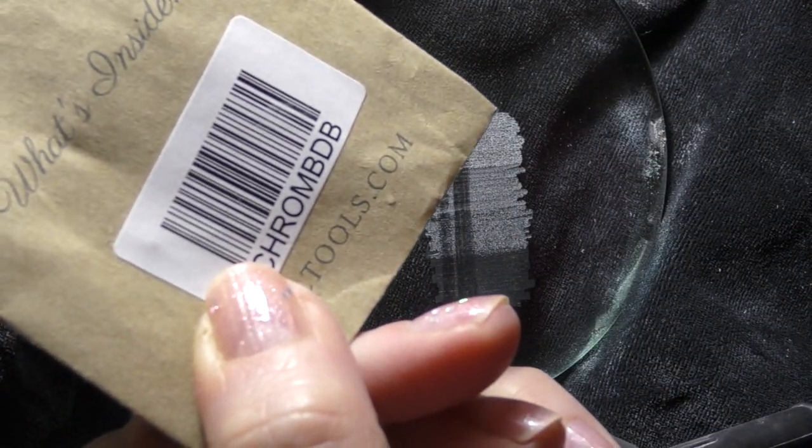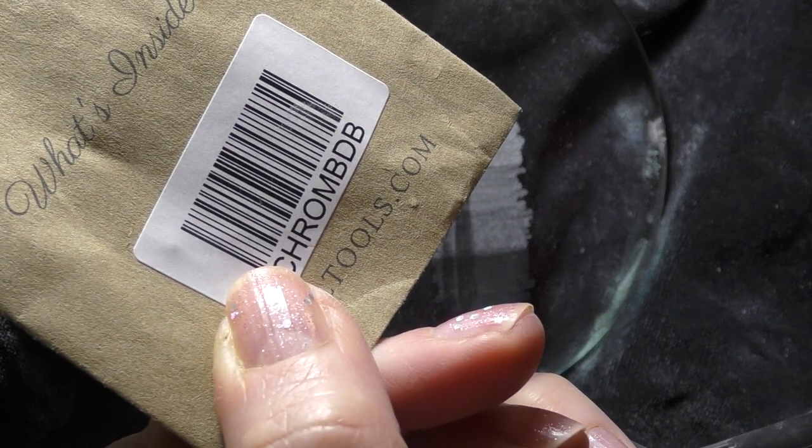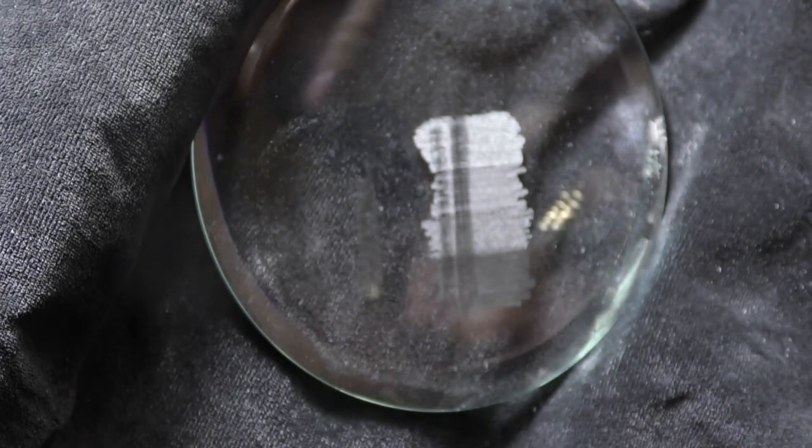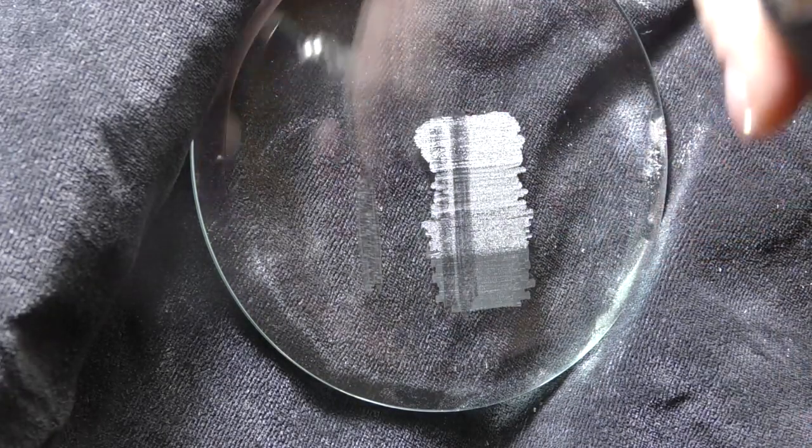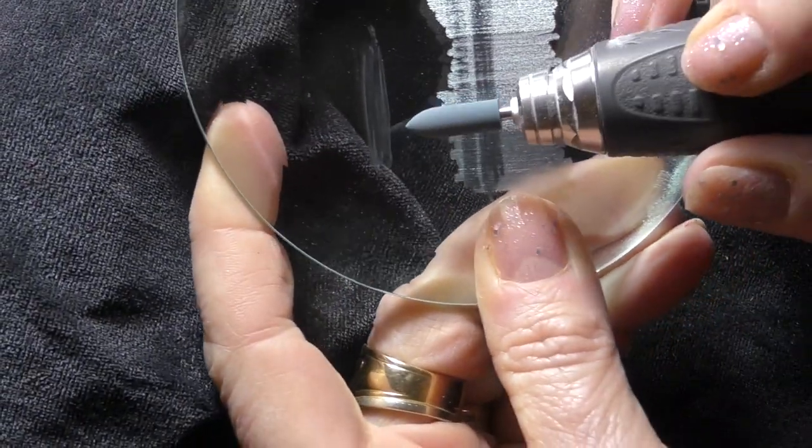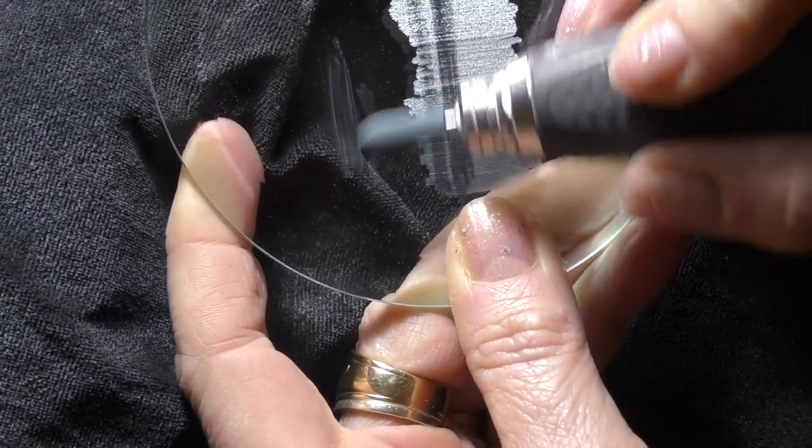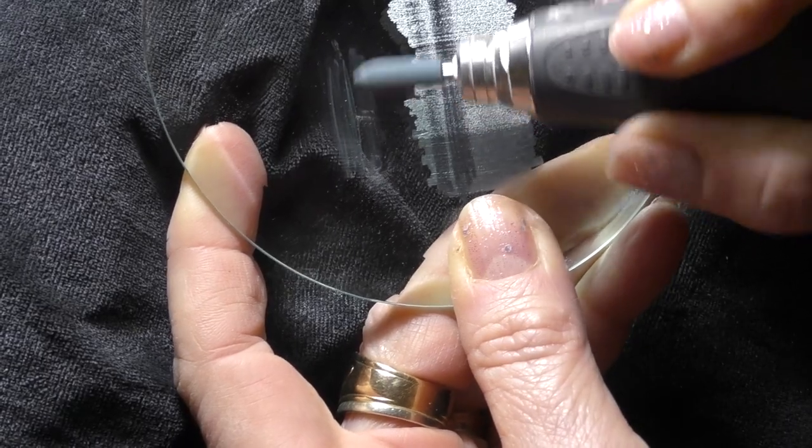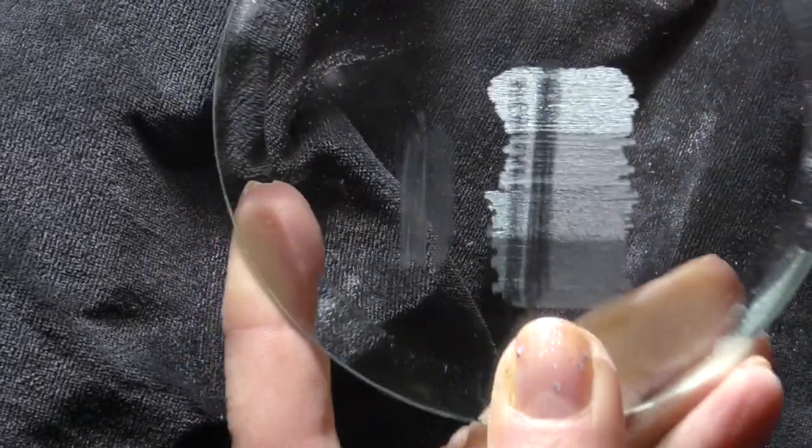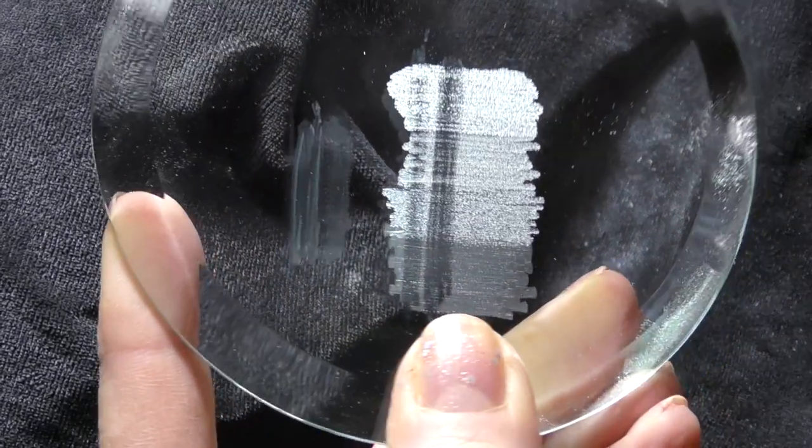And there you can see quite easily that it creates a hue which also can be very useful. Now we're going to try the fixed rubber burr that is slightly more abrasive. And first of all I am showing you that it does also create a slight hue on the glass by itself, not as much as the other one.